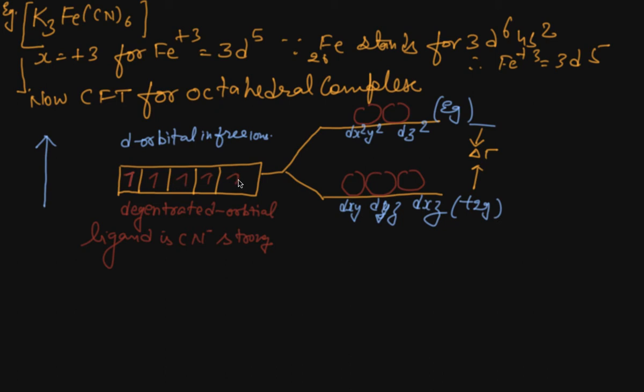So now in the d orbital, how many electrons are present? Five. This is called degenerate d orbital. We are working with the strong ligand cyanide. When the electrons present in the d orbital of the metal and electrons of the ligand are approaching each other, repulsion takes place.